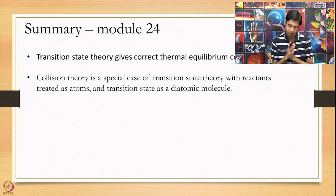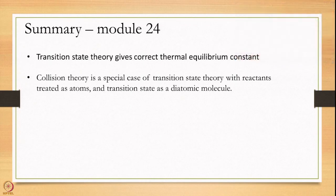In summary today we have discussed two points. First, we briefly looked at the equilibrium constant derived from Transition State Theory and shown that it is consistent with what you expect from thermodynamics. Second, we looked at the relation between Transition State Theory and collision theory: collision theory is a special case of Transition State Theory applied to two atoms colliding to give a linear transition state. Thank you very much.